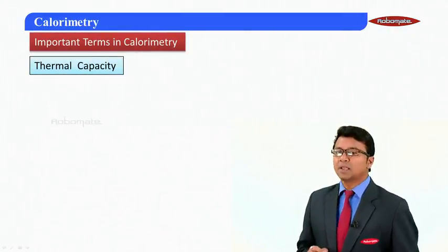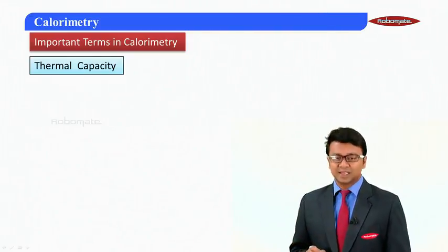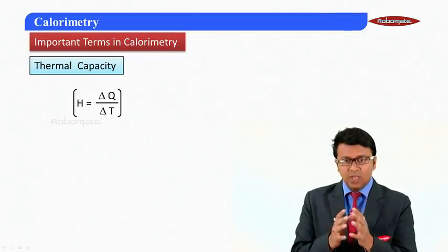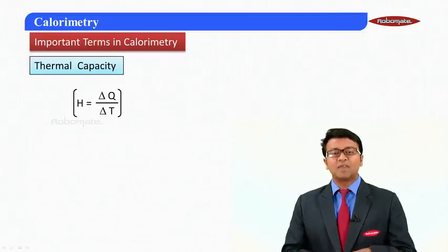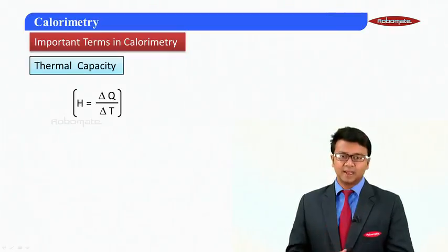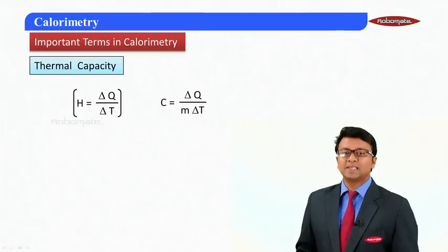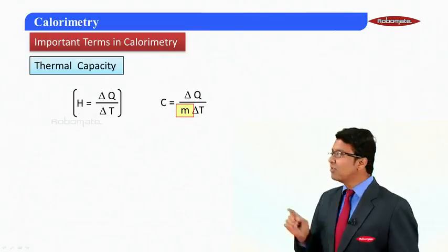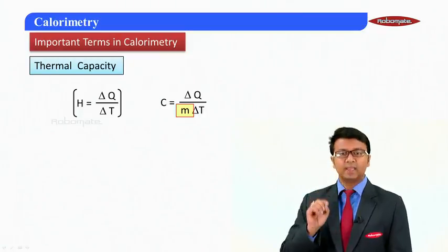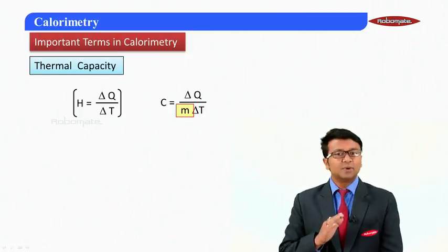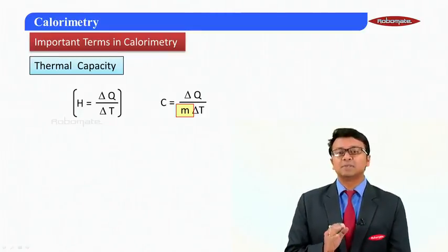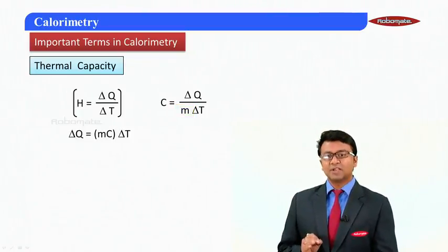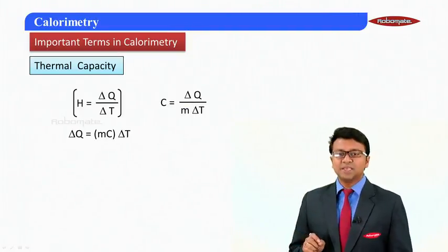The first term we encounter is thermal capacity. Thermal capacity is defined as the amount of heat required to raise the temperature of the entire body by 1 degree centigrade. Comparing this with specific heat capacity, it is the amount of heat required to raise the temperature of unit mass of a substance by 1 degree. The difference is that thermal capacity applies to the entire body, while specific heat capacity applies to a unit mass.